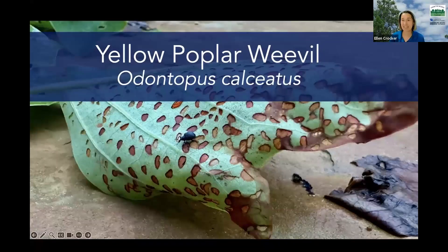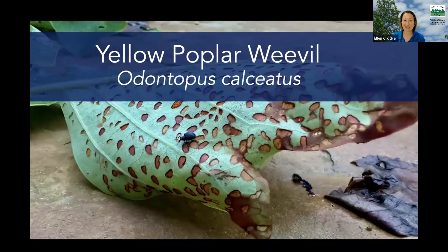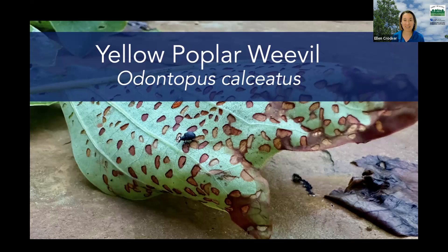Today we're going to be talking about yellow poplar weevil. Hopefully you can see my slides and this leaf right here. This time of year if your tulip trees have seen better days, if their leaves are turning brown and looking like this picture, it could be the work of the yellow poplar weevil.